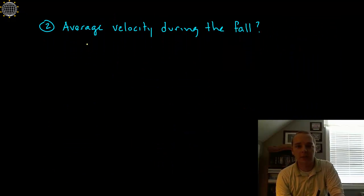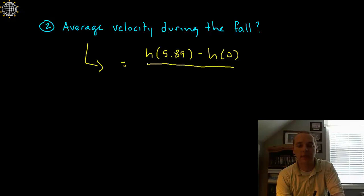So I need to find this average rate of change here. So I think this answer, this average velocity, would be the height at whenever it hits the ground, that's the terminal point, that's when it stops falling at 5.89 seconds minus the initial height at 0 seconds divided by 5.89 minus 0.